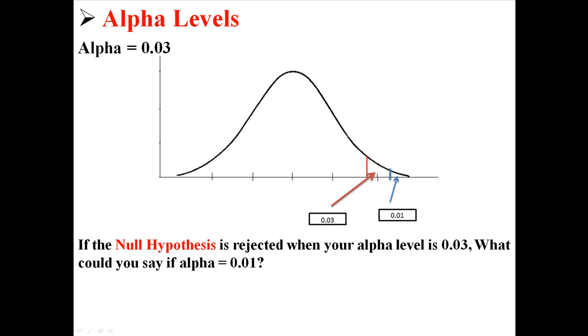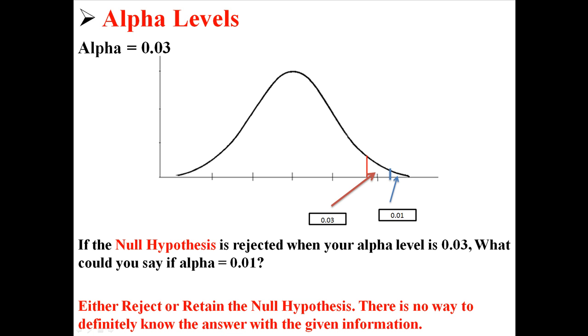If it was to the right of the blue line, you could reject at 0.01. If it was between the red and blue lines, you could reject at 0.03, but not at 0.01. So here you would either reject or retain the null hypothesis. There is no way to definitively know the answer with the given information.